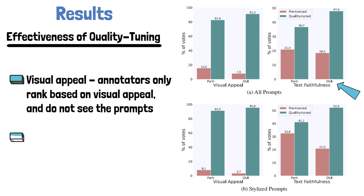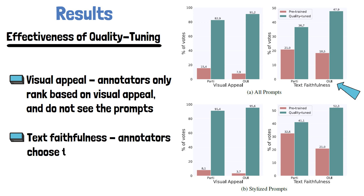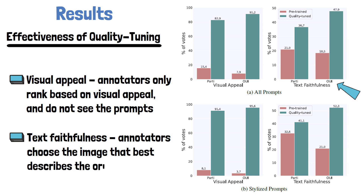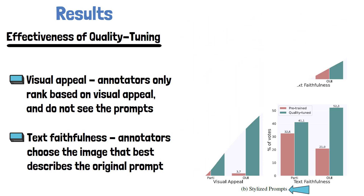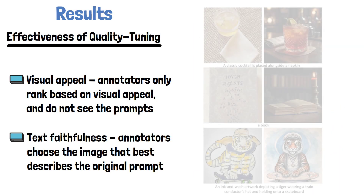On the top right we can see the comparison for text faithfulness, where annotators do see the original prompt and are asked to select the image that best describes the prompt, ignoring visual appeal. Here also the quality tuned model outperformed the pre-trained model, by a smaller margin. The reason the numbers do not sum to 100 is that in the remaining cases there was a tie. In the lower two charts we can see a similar trend for both metrics when measured over stylized prompts, for example prompts that ask for a sketch or a cartoon.